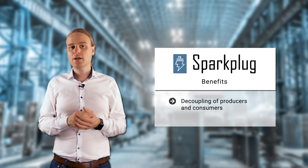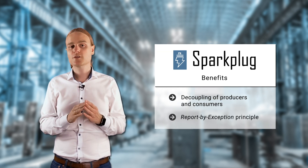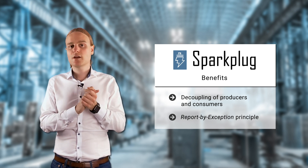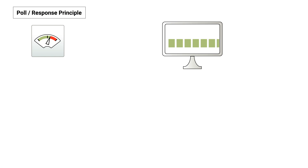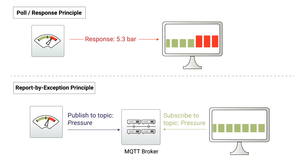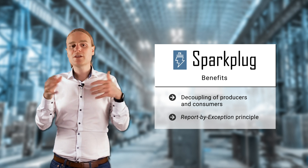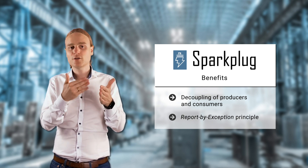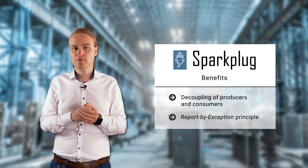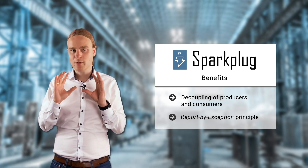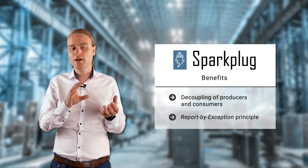Then we have the report-by-exception principle. This is quite different from a poll-response principle, because data is only reported if it changes. With a traditional architecture, a pressure sensor would be polled once per second or even more often, even if the data doesn't change. With Sparkplug, data is only published when it changes. The same is true for state changes — if a device goes online or offline, this is published immediately. You get things in near real-time, and report-by-exception saves you bandwidth, computing power, and memory consumption on your devices, producers, and consumers.